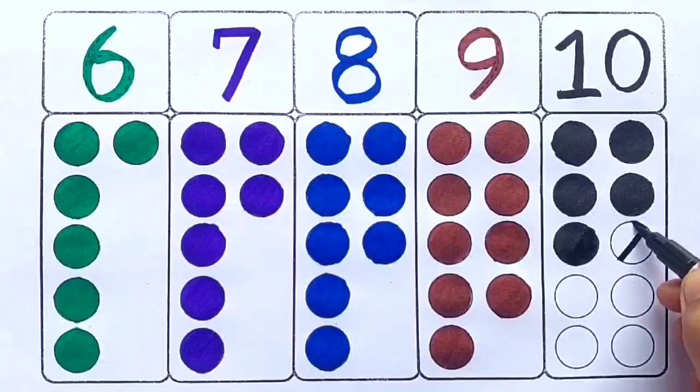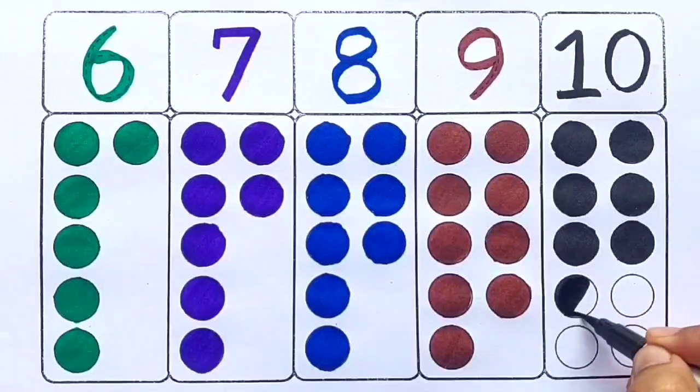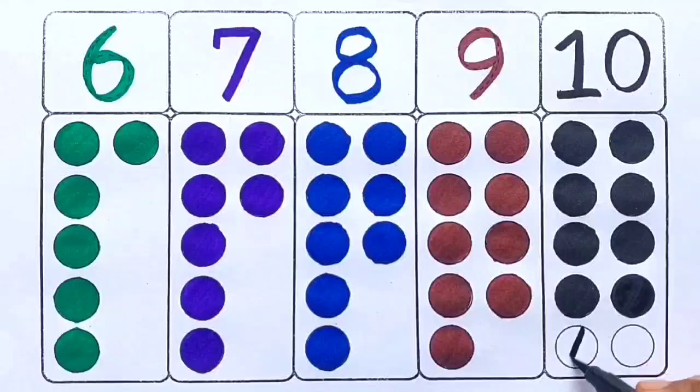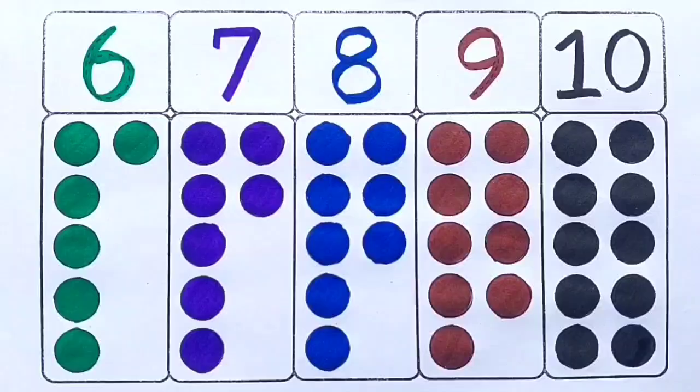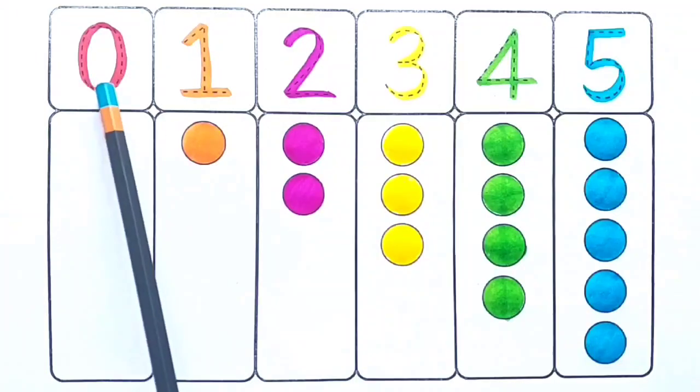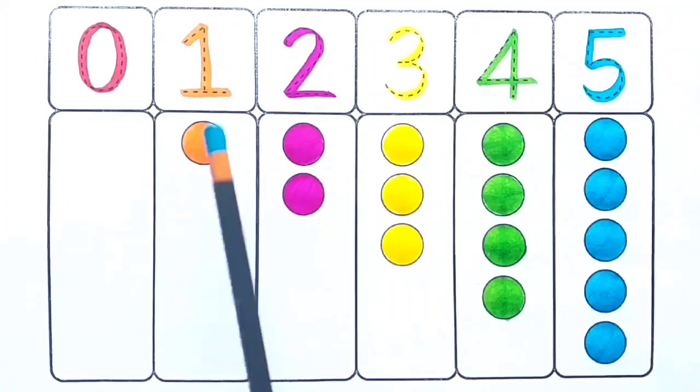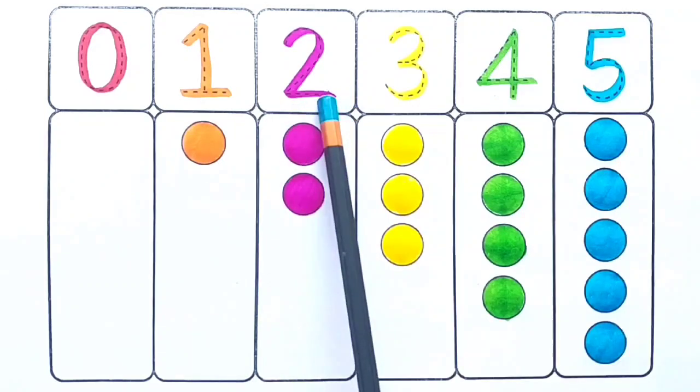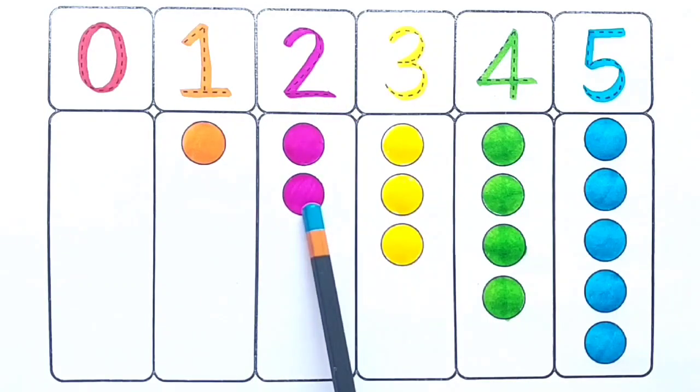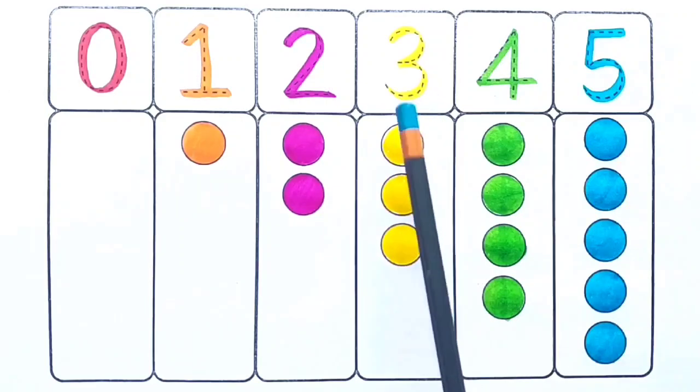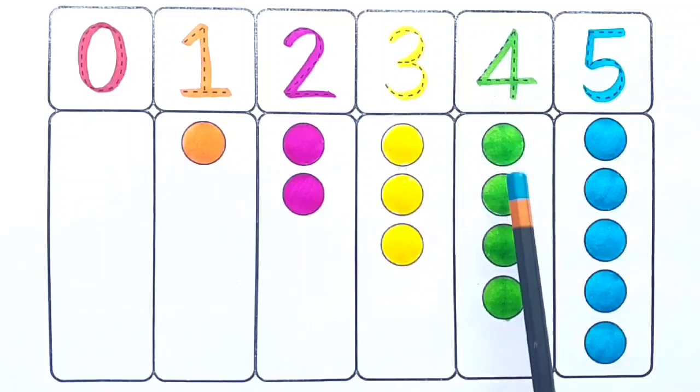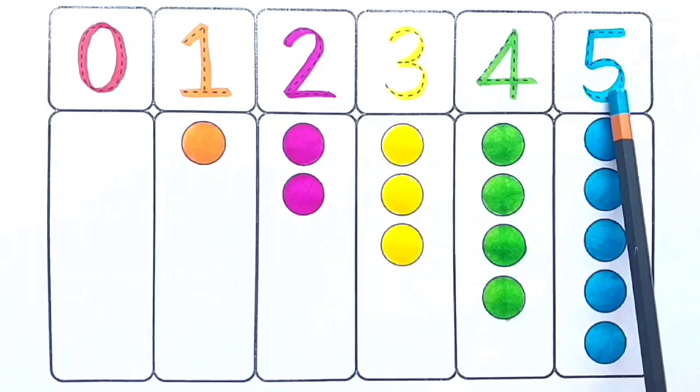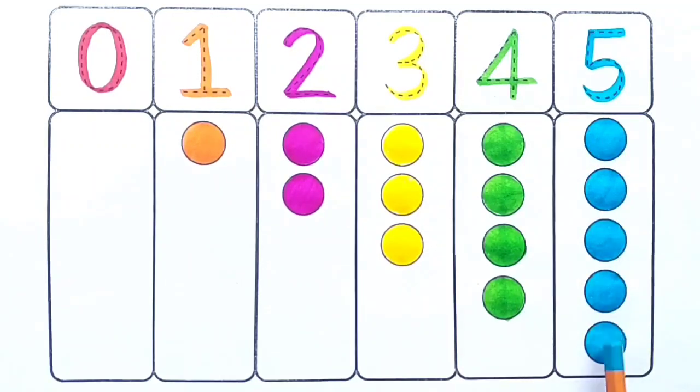Let's revise. Zero. One. One two. One two three. One two three four. One two three four five.